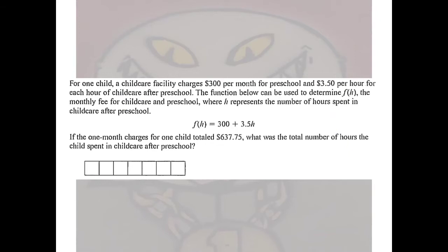All right, for our next problem, as you can see, there's a lot of reading. You can go through and read that. I'm going to cut to the chase here. It's $300 per month and $3.50 per hour, as represented in this. This would be kind of like, thought of like a slope. That's kind of like a y-intercept. So this is one month charges for a child is $637.75.